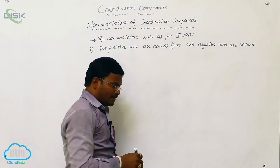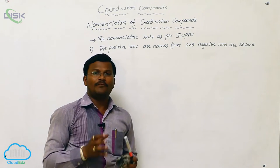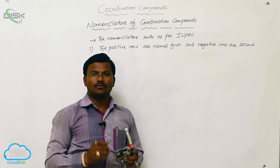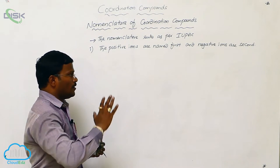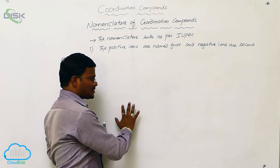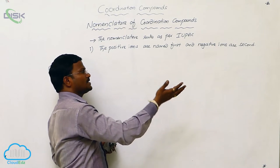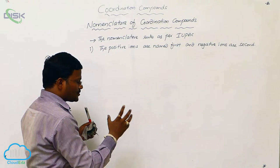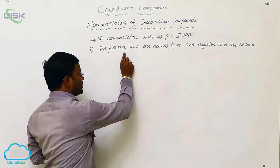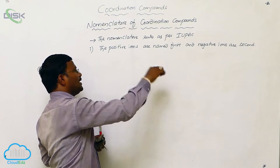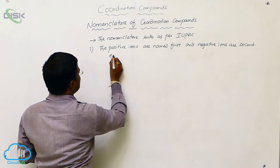What is the statement? When we provide a name for a given coordination compound, first we have to identify which are positive species or ions and which are negative species or ions. When we start the name, we must mention the positive ion name followed by the negative ion name.